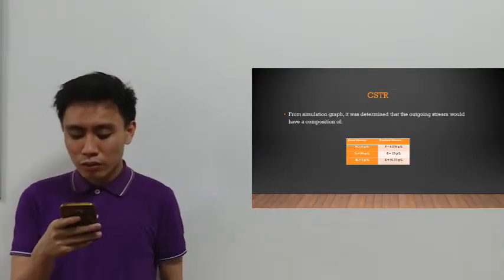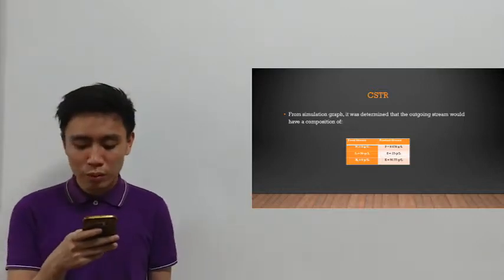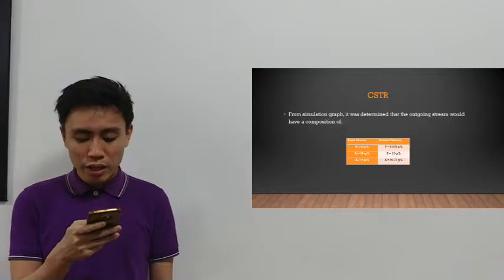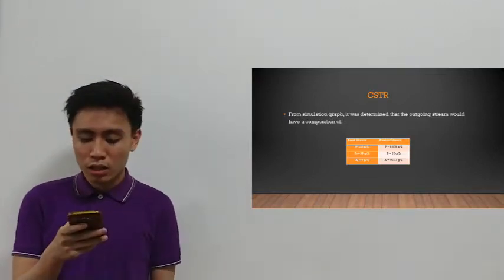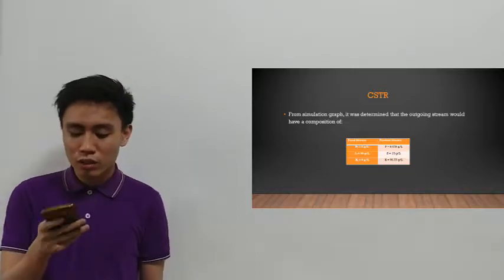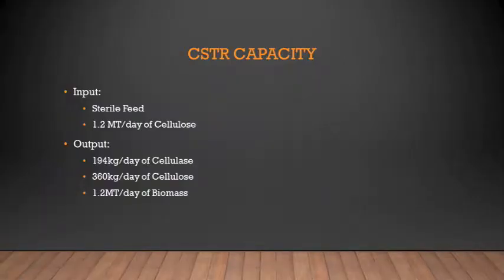For the CSTR, from our simulation we determined the outgoing stream compositions. On a per day basis, our CSTR capacity involves a sterile feed, so the only input is 1.2 metric tons per day of cellulose. The outputs are 194 kilograms per day of cellulase product, 360 kilograms per day of cellulose, and 1.2 metric tons per day of biomass.